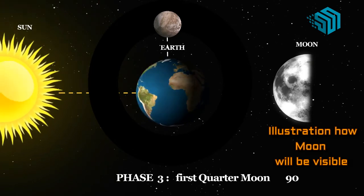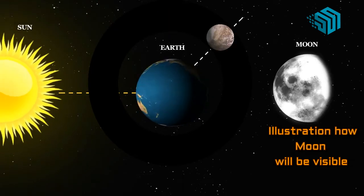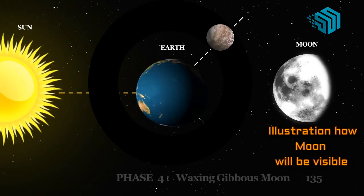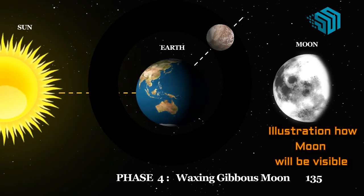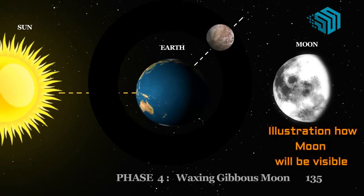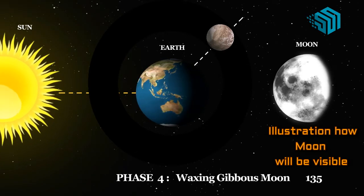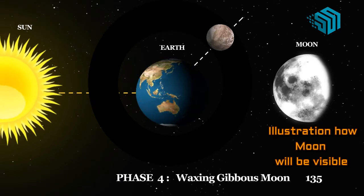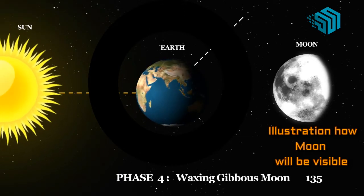Phase four, waxing gibbous. At this time more than half of the moon is lit up. The part that is lit is slowly getting bigger. Waxing means to slowly get bigger.